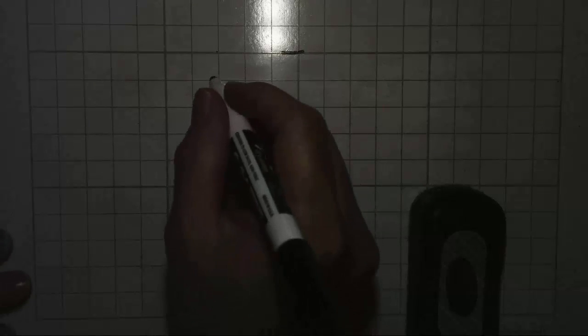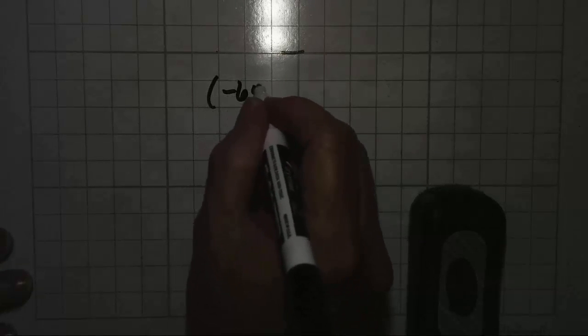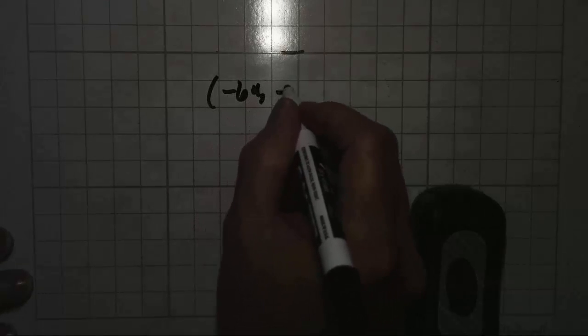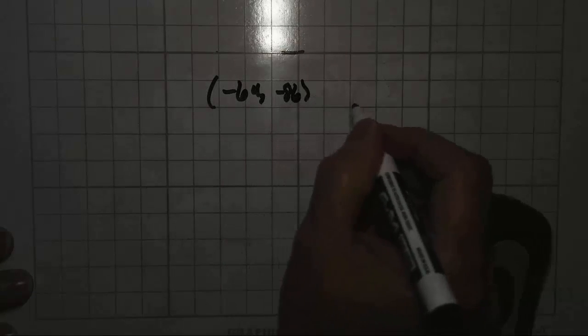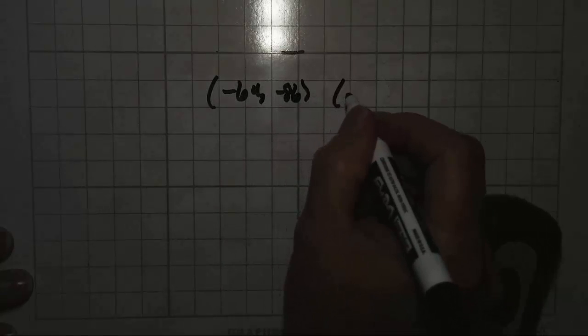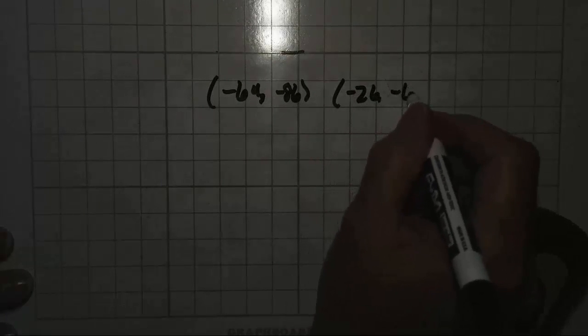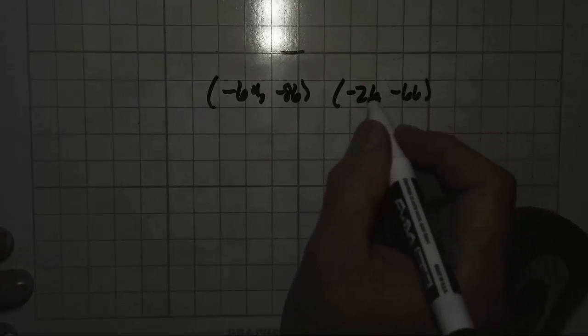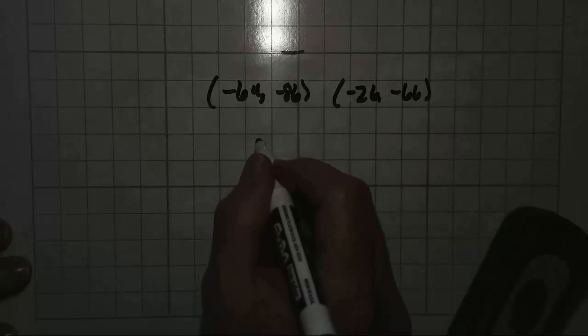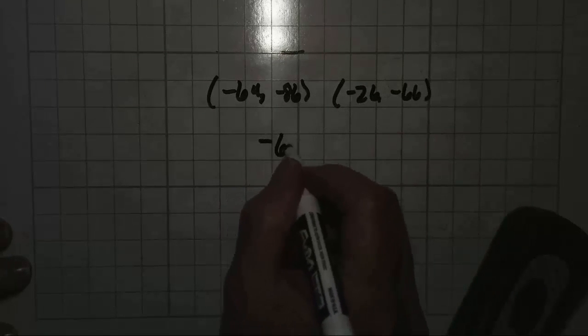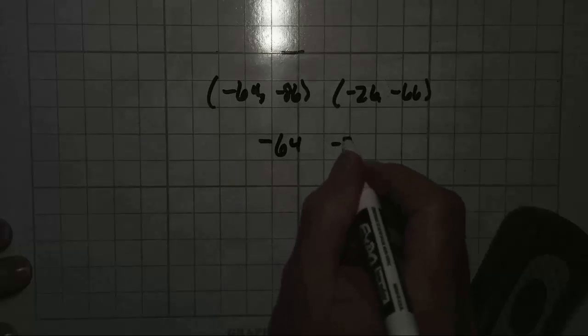Let's do one more. Let's get one with some ugly numbers. Negative 64 and negative 86, that's the coordinates of one endpoint. Negative 26 and negative 66, that's the other. So let's stack them up like we used to. Negative 64 and negative 86. Negative 26 and negative 66.